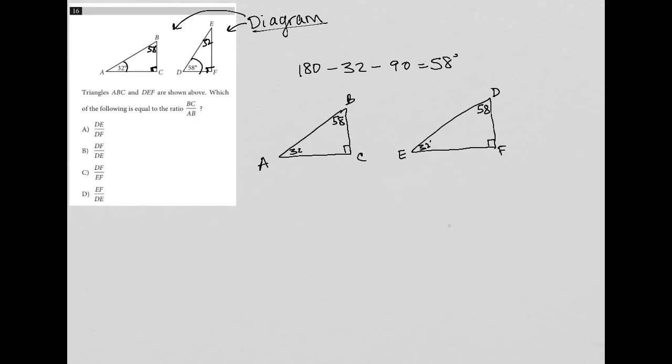So the question says triangle ABC and DEF are shown above. Which of the following is equal to the ratio of BC to AB?